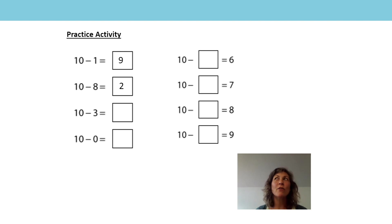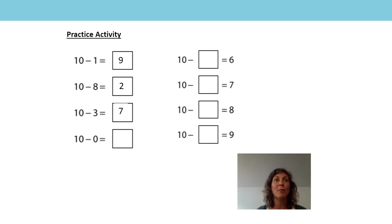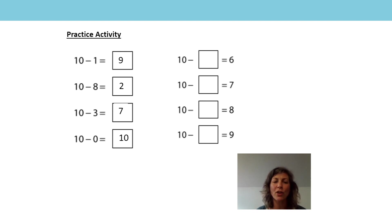10 is made of 3 and 7, 7 and 3 make 10, so 10 minus 3 is equal to 7. 10 is made of 0 and 10, 10 and 0 make 10, so 10 minus 0 is equal to 10. Did you notice something about the equations on the other side?